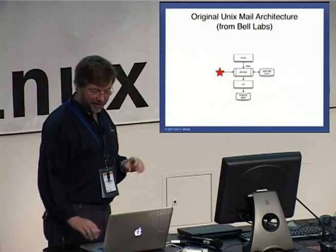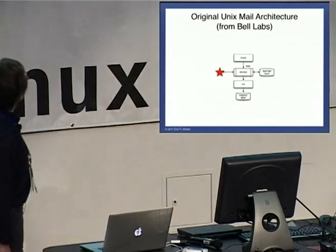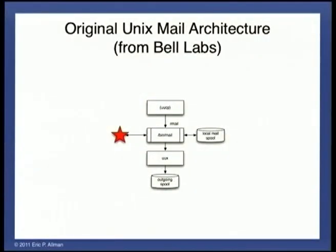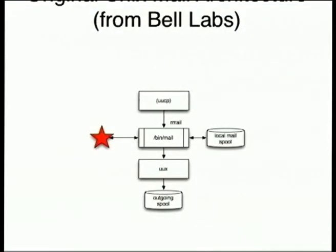Here's my first architecture slide. This was as it came from Bell Labs. Bin mail was both the user interface and, well, it was everything — bin mail was the mail system. There was a network called UUCP, so it could send mail into bin mail. You could send mail using UUX, Unix to Unix execute, which had its own spool directory, and the local mail spool — i.e., your mailboxes — were on the side.